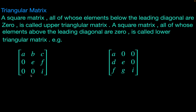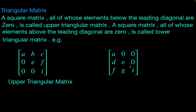The matrix shown here is an upper triangular matrix — it has all the terms below the leading diagonal equal to 0. The second matrix is a lower triangular matrix, where all the terms above the leading diagonal are 0.